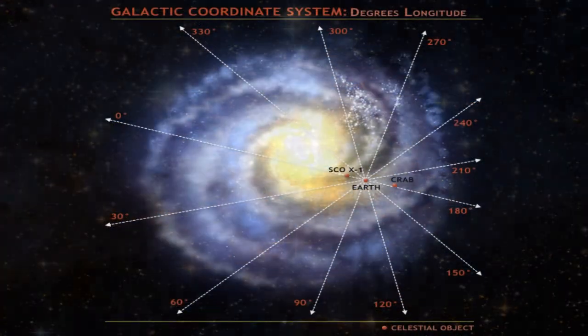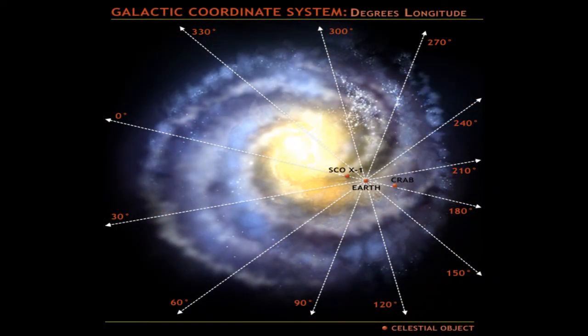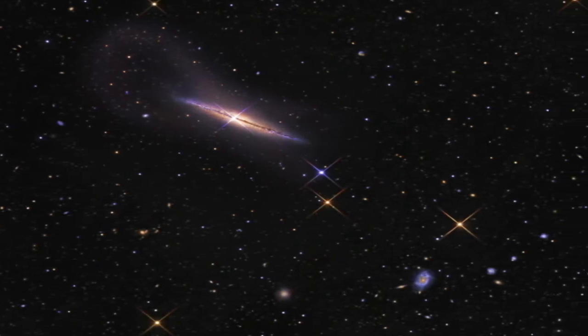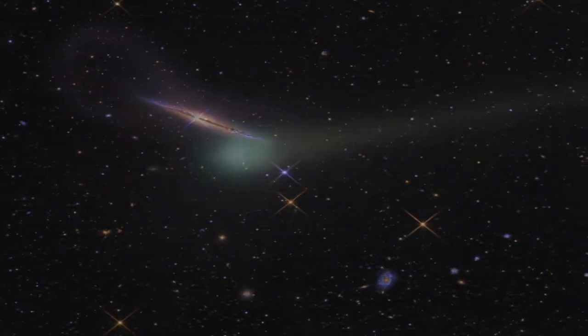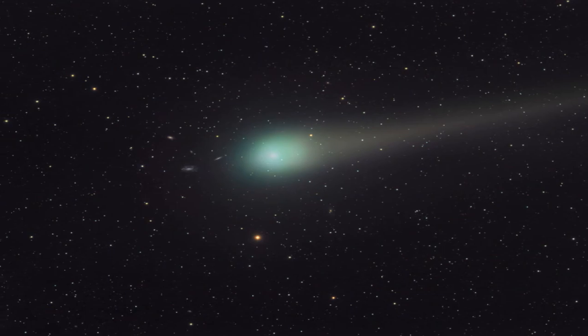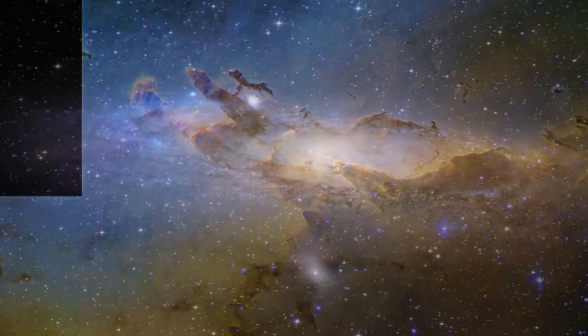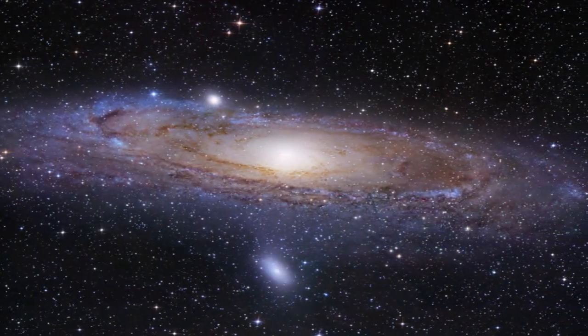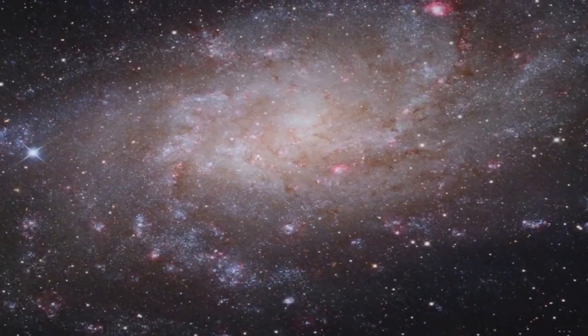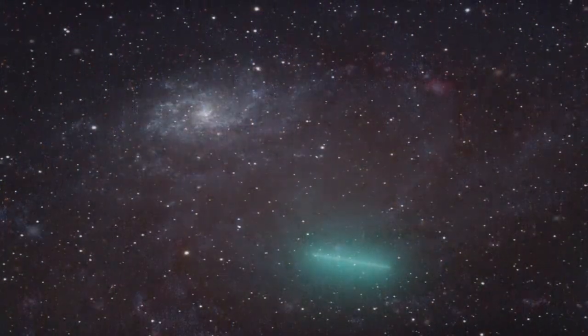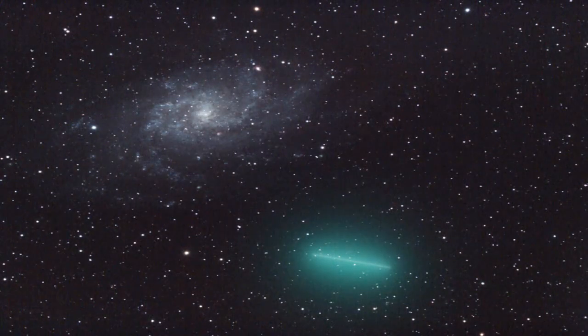And we can measure that change in brightness or that slight dimming for the period of hours it takes a planet to go across the star. The planet will reveal itself by blocking part of the star's light, and it does that once per orbit. So by that method, not only can we determine the size of the planet by the depth of the dimming, but we can also determine the orbital period or how far the planet is from the star. There's a wealth of information we can get from this technique.